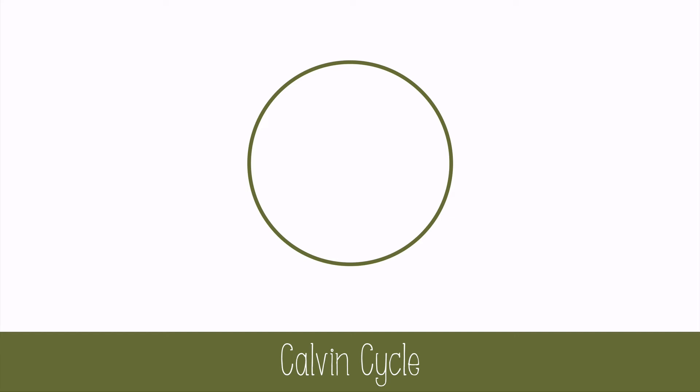The purpose of the Calvin cycle is to produce carbon-based molecules that can be used for energy, storage, and structural purposes. The carbon source for all photosynthetic organisms is carbon dioxide. The first step of the cycle is called carbon fixation, because carbon dioxide is converted, or fixed, into an organic compound.